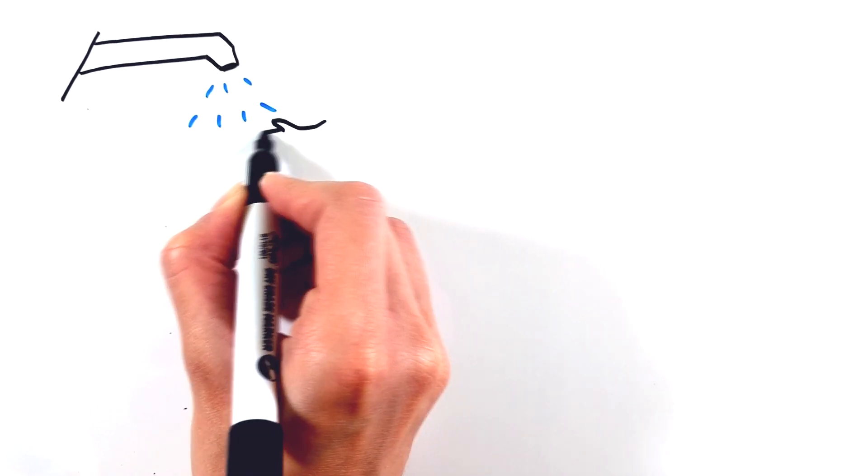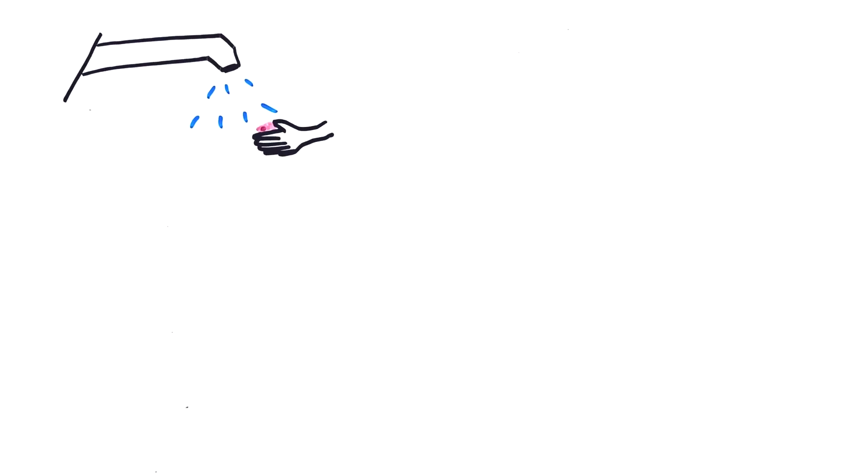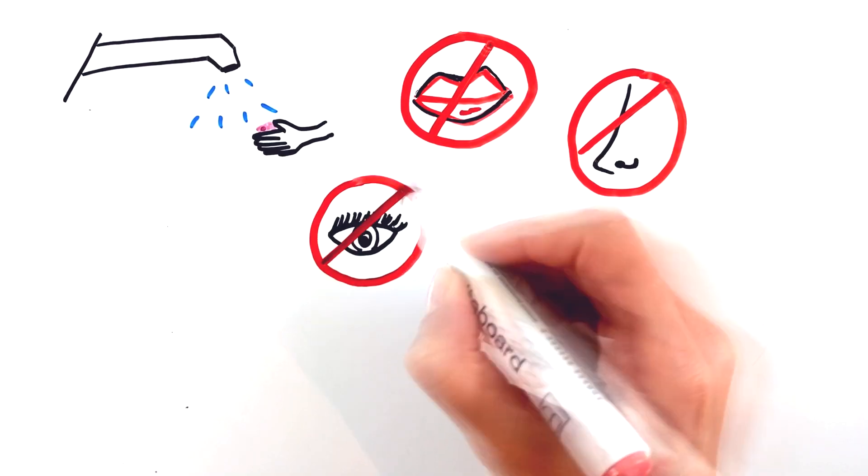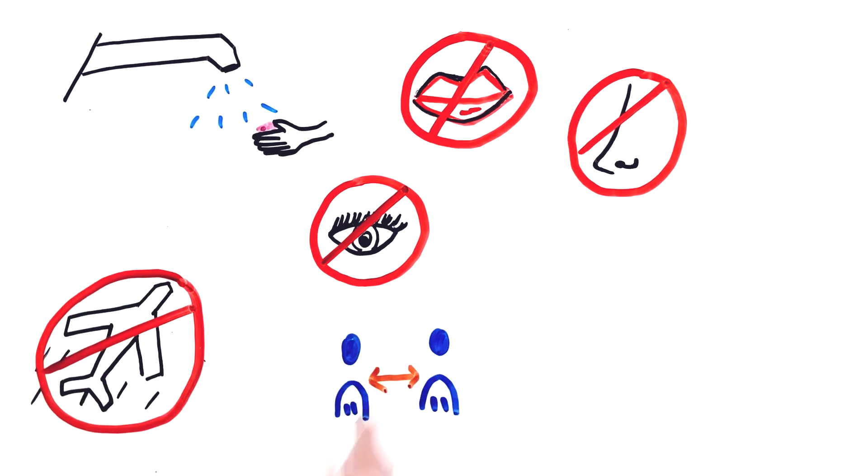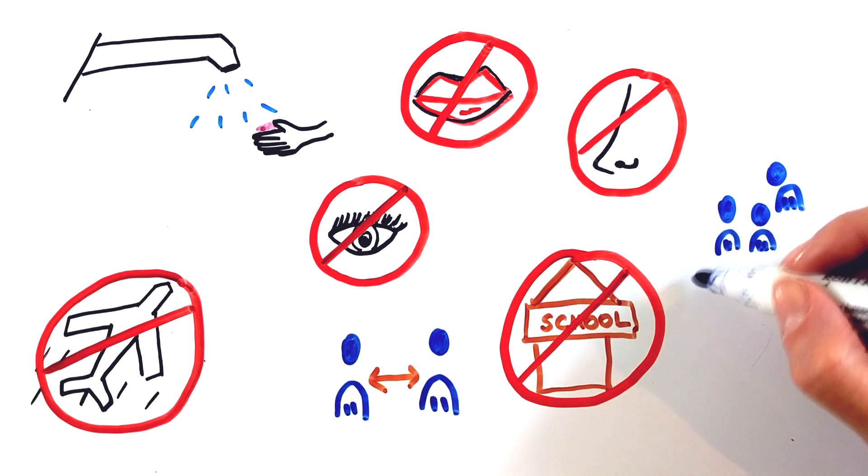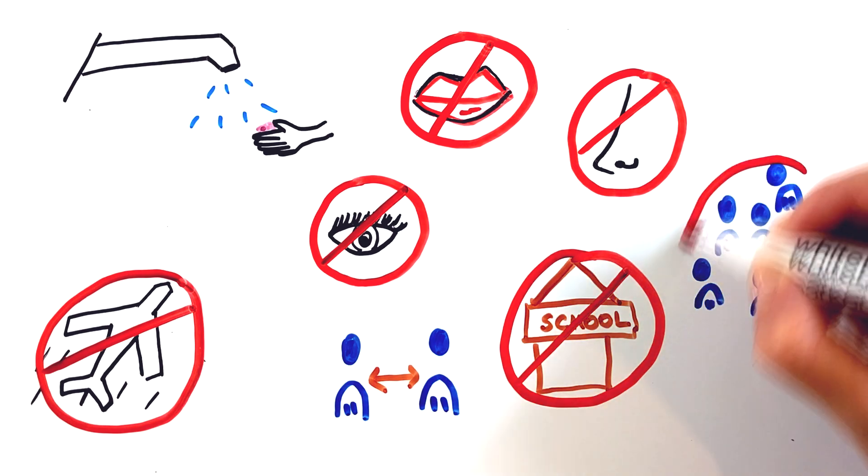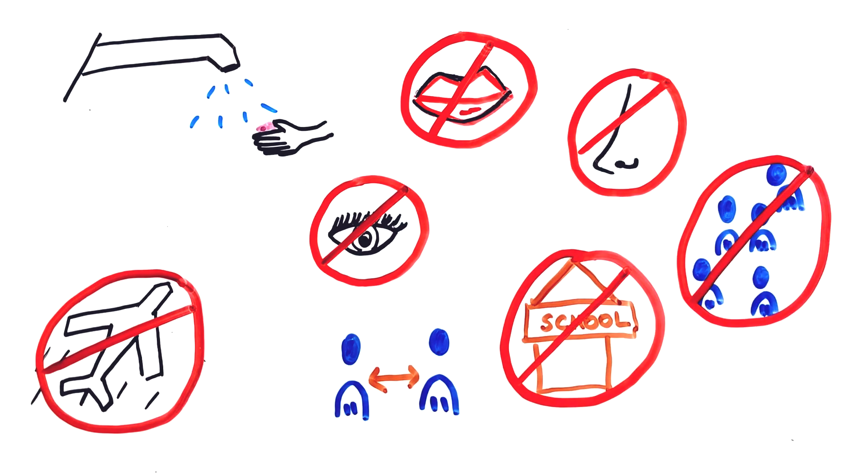Non-pharmaceutical preventative measures such as personal hygiene, washing hands regularly, avoiding touching your mouth, nose, and eyes, travel restrictions, self-quarantine and social distancing, and closing schools and canceling mass gatherings are of great importance during a pandemic outbreak.